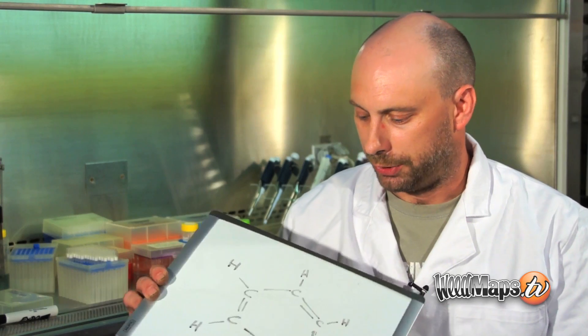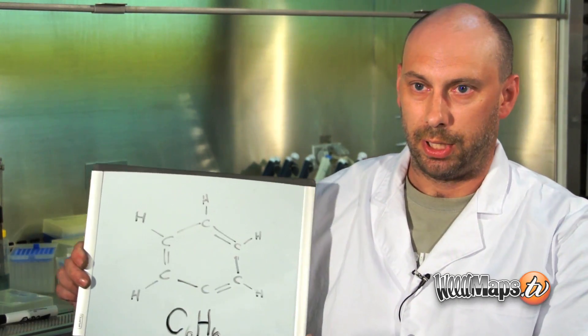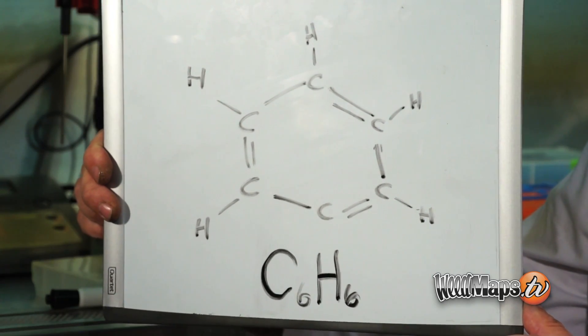The main terpenoids in cannabis are myrcene, lemonene, caryophyllene, and pyrene. Additionally, they all will contain this kind of structure, which is the very most simple aromatic compound, which we call benzene, has the formula C6H6.